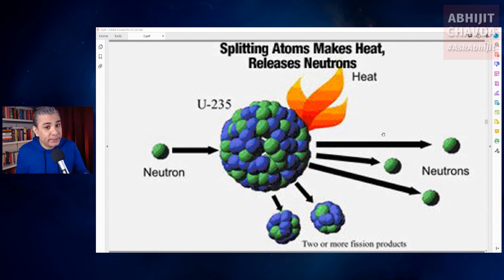It also releases neutrons. The two atoms that result from the fission also release beta radiation and gamma radiation of their own. It is possible to artificially induce fission in uranium atoms by bombarding them with neutrons.